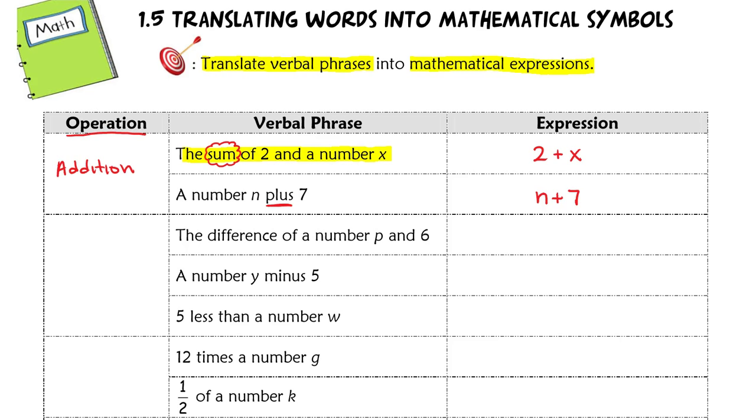The next example says the difference of a number p and 6. So difference, we remember this from one of our first lessons of the year—difference means to subtract, so our operation here is subtraction. And again, you'll notice all of these problems in this particular box here are subtraction. We have a number minus 5, and then here this one's a little trickier, but 5 less than means to subtract as well. So we'll talk about that one in a second. So let's go back to the difference example. So if we're going to find the difference of a number p and 6, we're going to write p minus 6. So that represents the difference between p and 6.